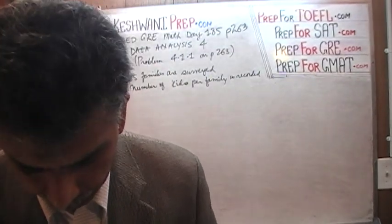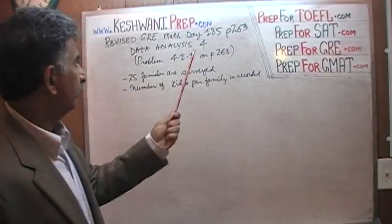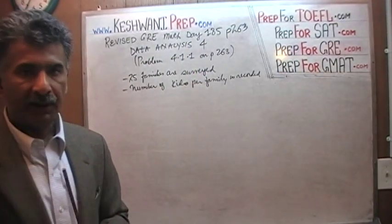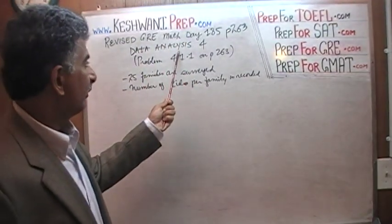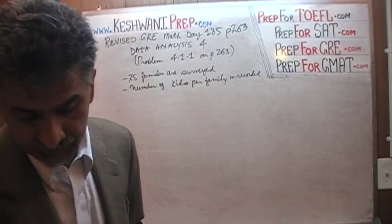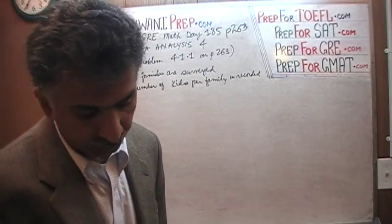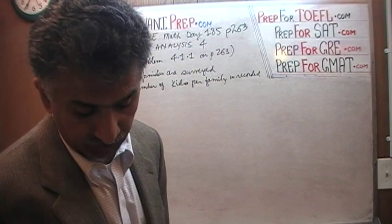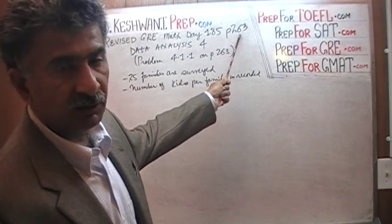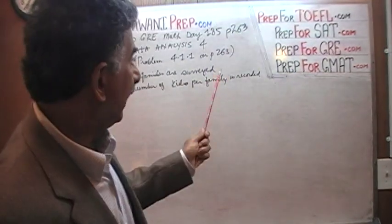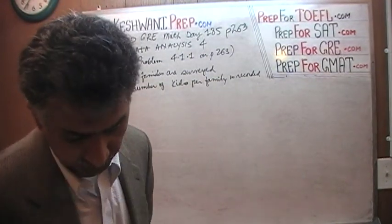The problem we are about to solve is on page number 263. Today is lesson number 185. Yesterday on day 184, we did the data analysis problem number 3 on page 296. The next problem — data analysis question number 4 on page 296 — is very similar to the problem on page 263. So I thought we should do this one first before we tackle the exercises. Let's do this together. Turn to page number 263.